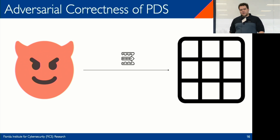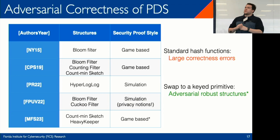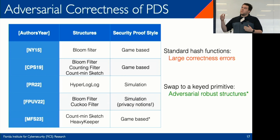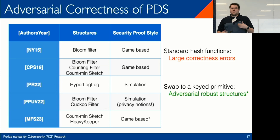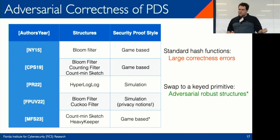What happens to these correctness guarantees in the presence of an adversary that can control some or all of the stream of data? There have been a number of papers on this, kicking off with Noori and Yegev in 2015. Multiple different structures have been analyzed through various security styles. The largely consistent result is that with standard hash functions, you can create large correctness errors with very minimal adversarial resources. But with a simple swap to a keyed primitive — replacing hash functions with PRFs — you generally get adversarially robust structures that retain a correctness bound close to the non-adaptive bound.